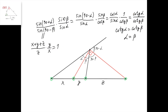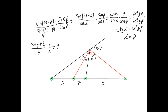So cotangent of alpha equals cotangent of beta, because this expression ultimately equals 1. We have two angles with equal cotangents, both between 0 and 180 degrees, and therefore the angles themselves are equal. This means that this red line is the angle bisector of this angle, and this red line is the external angle bisector of this same angle.